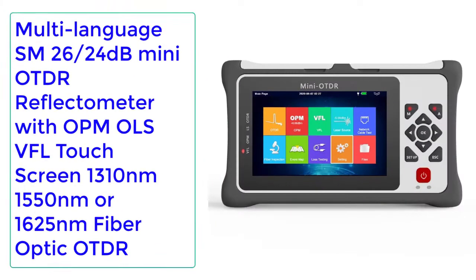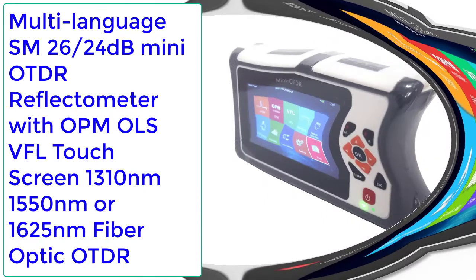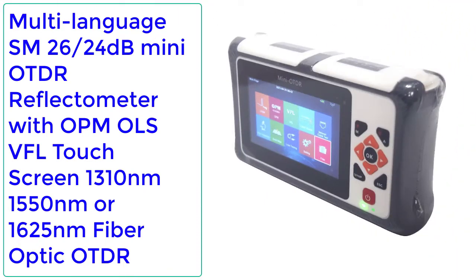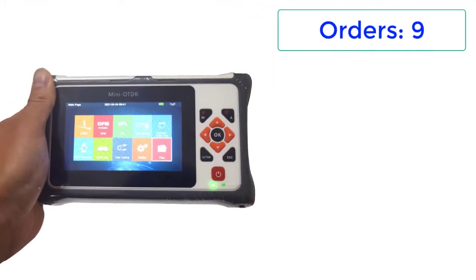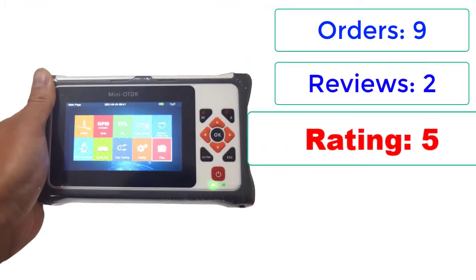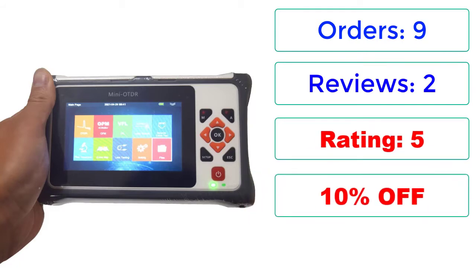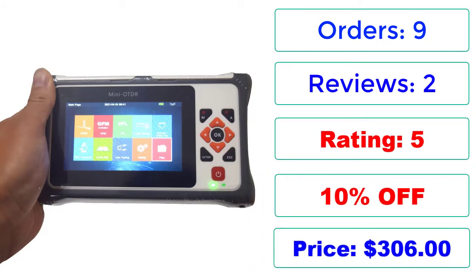Number 2: Multi-Language SM, 26/24dB Mini OTDR Reflectometer with OPM, OLS, VFL, touchscreen — 1310nm, 1550nm, or 1625nm fiber optic OTDR. Orders reviewed, Rating: 5, 10% off, Price: $306.